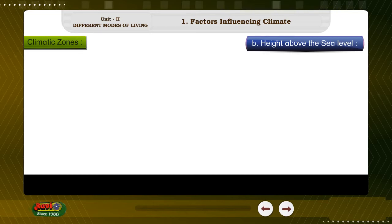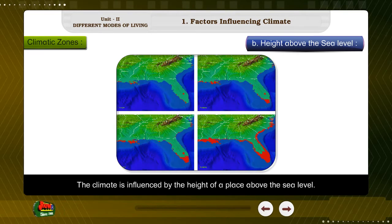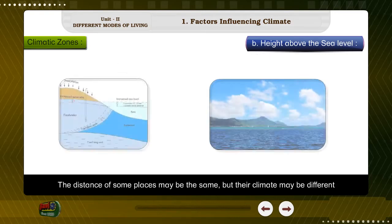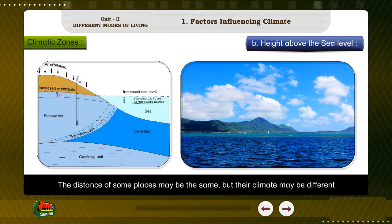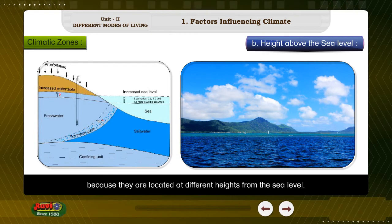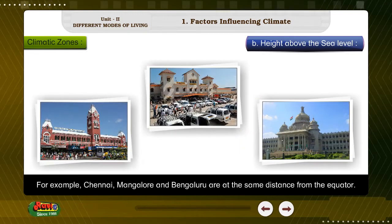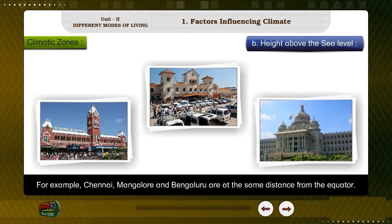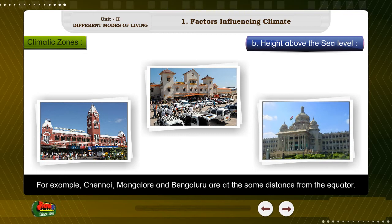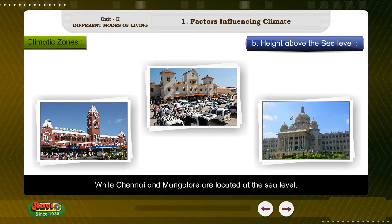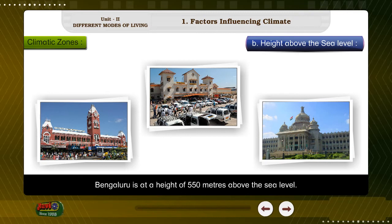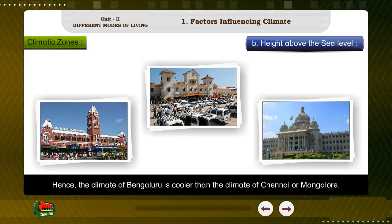Factor B: Height above the sea level. The climate is influenced by the height of a place above the sea level. The distance of some places from the equator may be the same, but their climate may be different because they are located at different heights from the sea level. For example, Chennai, Mangaluru, and Bengaluru are at the same distance from the equator. While Chennai and Mangaluru are located at sea level, Bengaluru is at a height of 550 meters above sea level. Hence, the climate of Bengaluru is cooler than the climate of Chennai or Mangaluru.